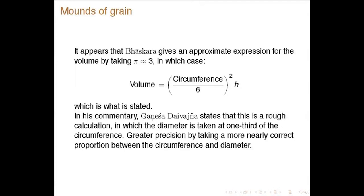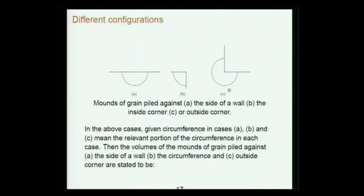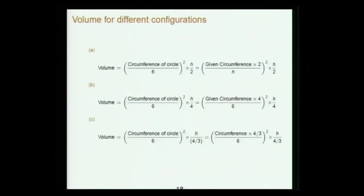In his commentary, Ganesh Daivajña states this is a rough calculation in which the diameter is taken as one-third of the circumference — greater precision requires a more nearly correct proportion between circumference and diameter. For grain stacked at a wall, only half the circumference comes into the picture; at a corner, three-fourths of the circumference is covered — volume expressions are given for these cases as well, essentially taking π ≈ 3.